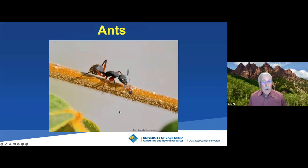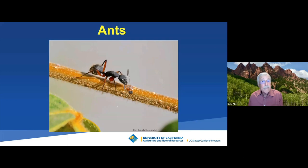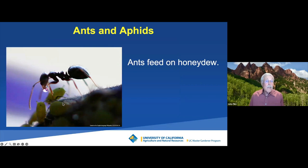Argentine ants are an invasive species — they've come up from Argentina. They are driving out some native bees and having other adverse effects. They do some positive things — they eat dead stuff, they help aerate the soil — but one of the bad things they do is associated with the honeydew from the aphids. Ants feed on honeydew; they like it and take it back to their nest to feed their young.